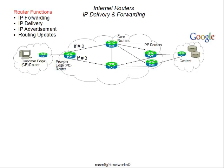The third function is advertisement. IP routers have routing tables, which we will see shortly, and those routing tables have lists of routes or IP address ranges that are known. They become known through an advertising process, which is a function of the particular protocols used. The routing update function is how those routing tables get updated and how the algorithms choose which outgoing interface is best for a particular incoming packet.